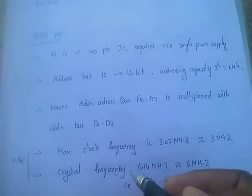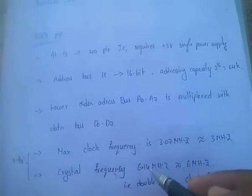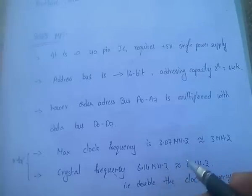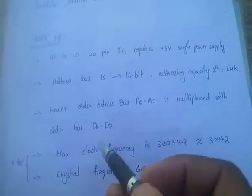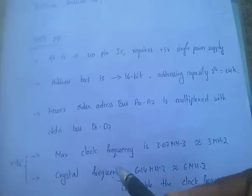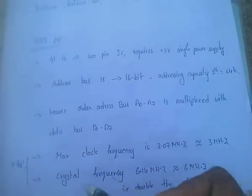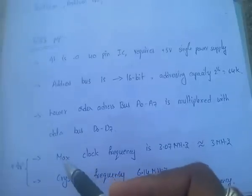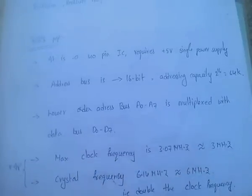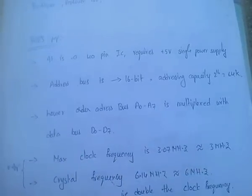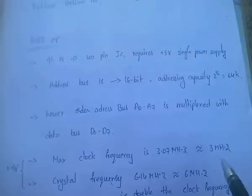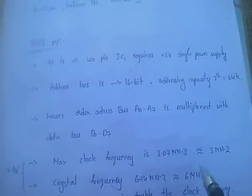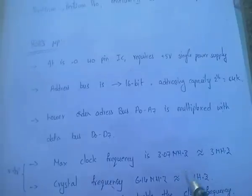The crystal frequency of the 8085 is approximately 6.14 MHz, which we consider as 6 MHz. The crystal frequency is always double the clock frequency — so the clock frequency is 3 MHz and the crystal frequency is 6 MHz.